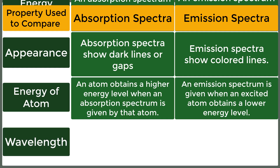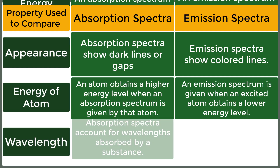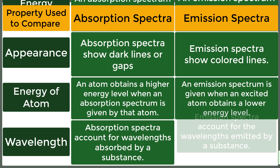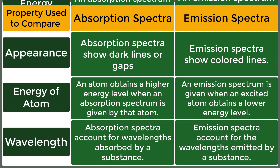Absorption spectra account for wavelengths absorbed by a substance, whereas emission spectra account for wavelengths emitted by a substance.